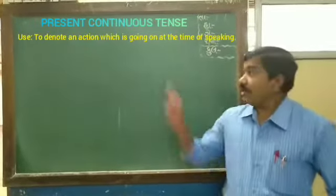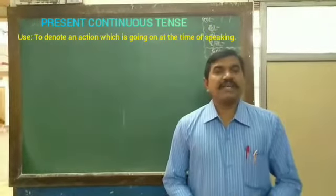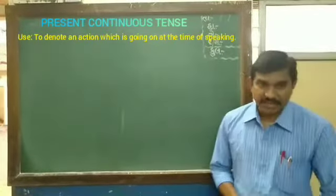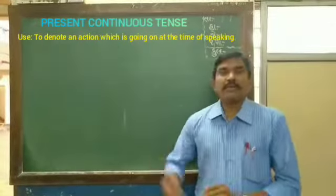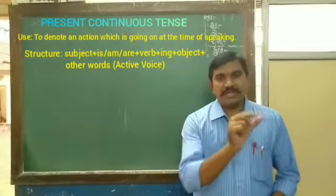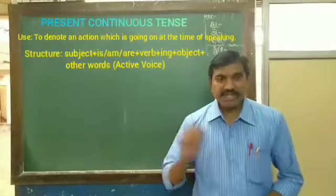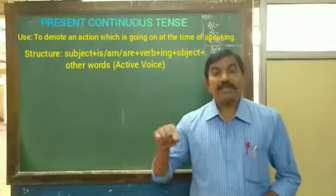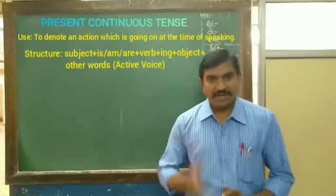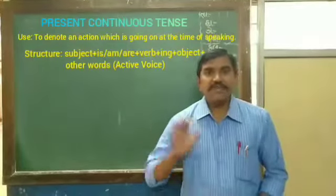Now, if we have a structure for Present Continuous Tense — the subject plus am, is, or are plus the verb plus '-ing' plus the object plus other words. This is the active structure.